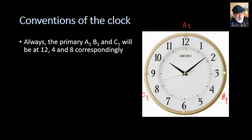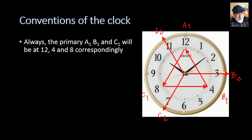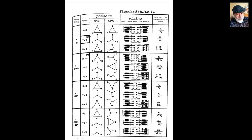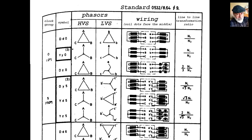The convention: phase A of the primary is always at 12, B at 4, and C at 8. We connect primaries X1, Y1, and Z1 in a delta again, but this time X2 is connected differently. Phase A of the secondary, connected to X2, must be at 11 o'clock. This is delta in the primary, Y in the secondary — group 11, that is DY11. There are quite a few possibilities, so engineers standardized: for new installations, only four connections are used — YY0, DY5, YD5, and YZ5.